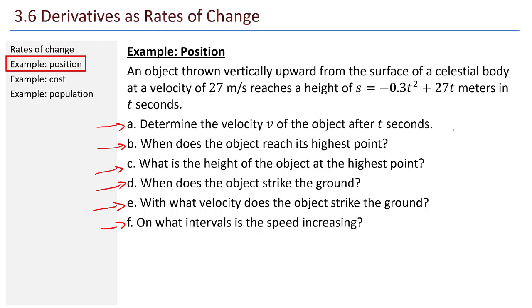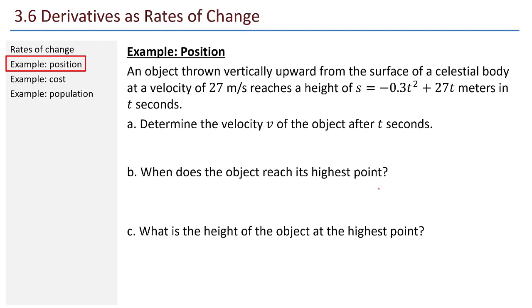All right, so A. Let's determine the velocity of the object after t seconds. How do we do this? Well, that's really looking at my position function, my height function, and taking the derivative of that, because velocity is the derivative of position. And there we go.